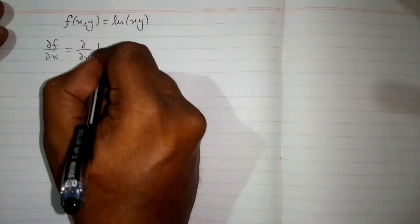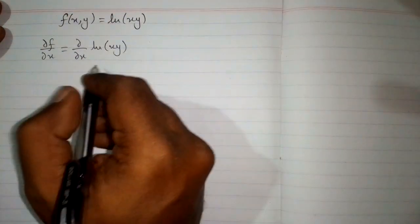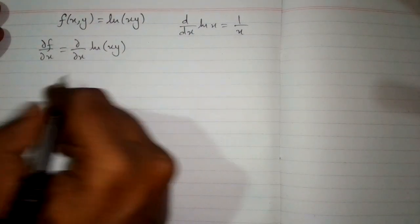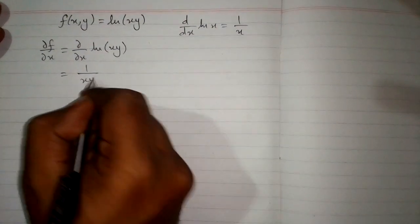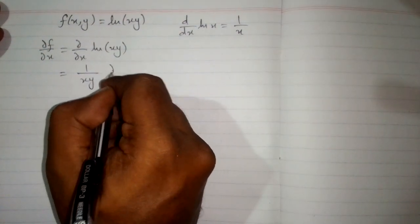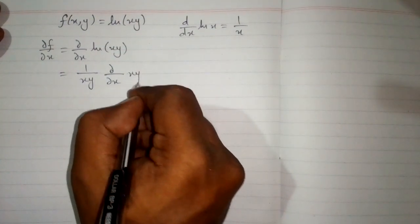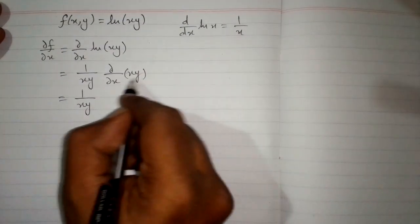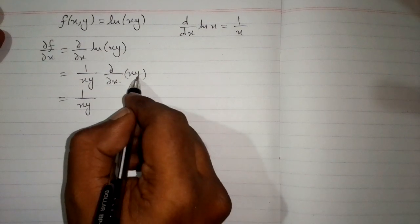In this video we will find the derivative of f with respect to x partially. We have to take the differential of both sides with respect to x partially. We know that the derivative of ln of x is 1 upon x. So the derivative of ln of xy with respect to x is 1 upon xy multiplied by the derivative of the inside. And since we are taking the derivative of xy partially with respect to x, we will treat y as constant.